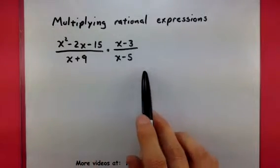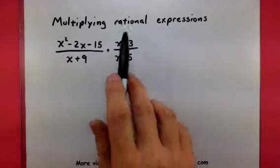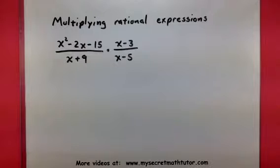Now if we take a look at our example and we start checking for common factors in the top and bottom, it doesn't quite look like anything is going to cancel out. Well sometimes that happens.